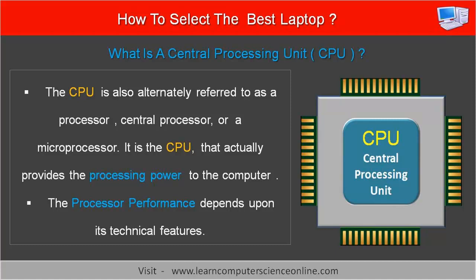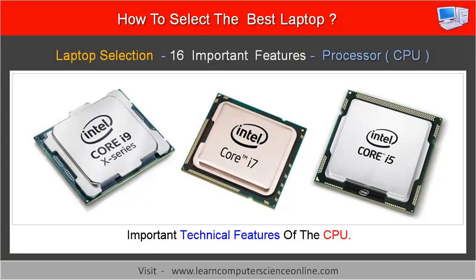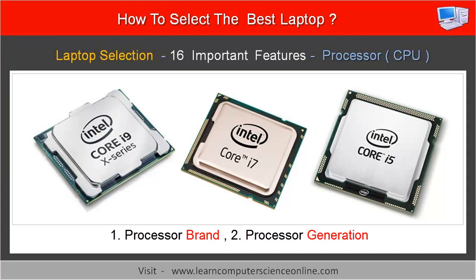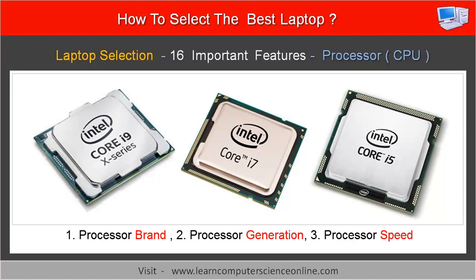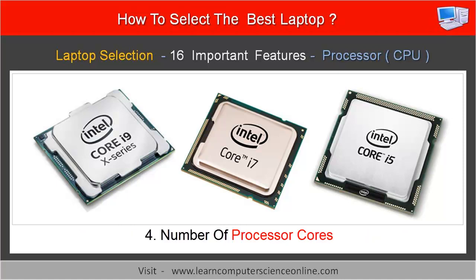The processor performance depends upon its technical features. Some important technical features of the processor include: first, the CPU brand; second, the CPU generation; third, the processor speed; and fourth, the number of cores present inside the processor chip.